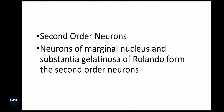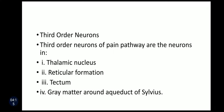The second order neurons are the neurons of the marginal nucleus and substantia gelatinosa of Rolando, situated in the posterior gray matter of the spinal cord. The third order neurons of the pain pathway are situated in the thalamic nucleus, reticular formation, tectum, and gray matter around the aqueductus of Sylvius.